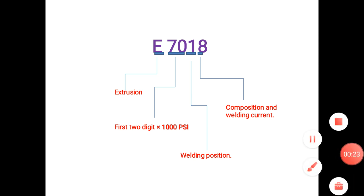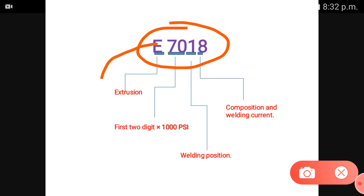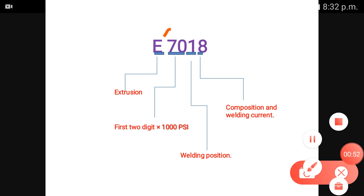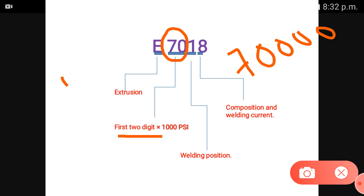The electrode code starts with E7, followed by digits like 1 and 1. The first two digits after E indicate the minimum value of tensile strength of the electrode.